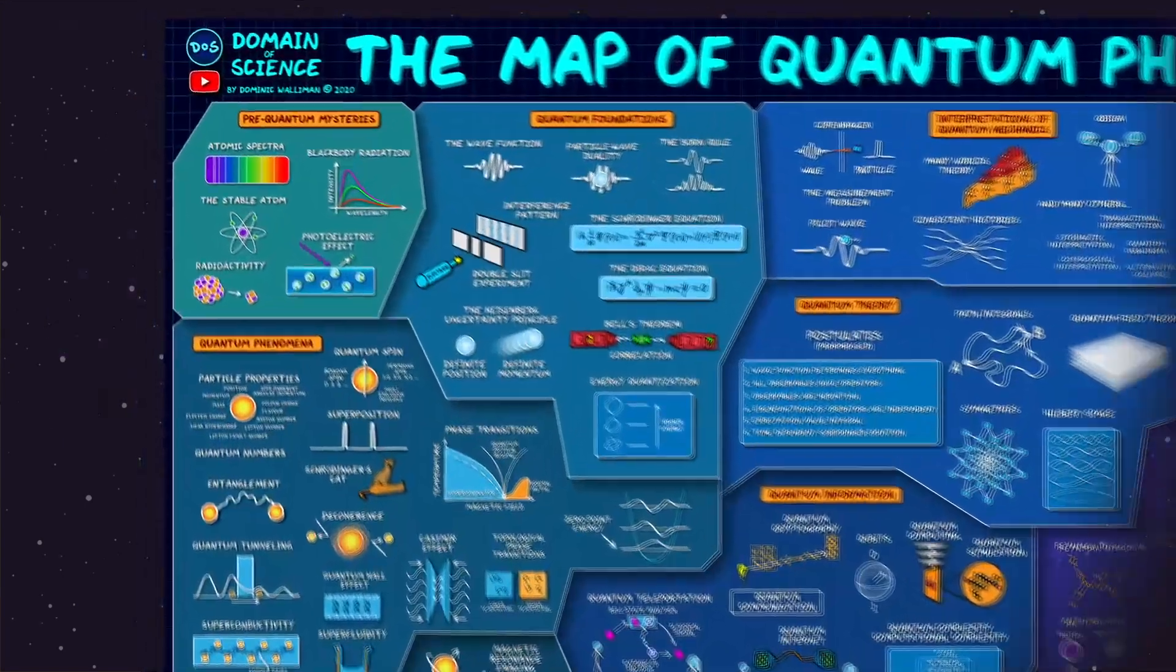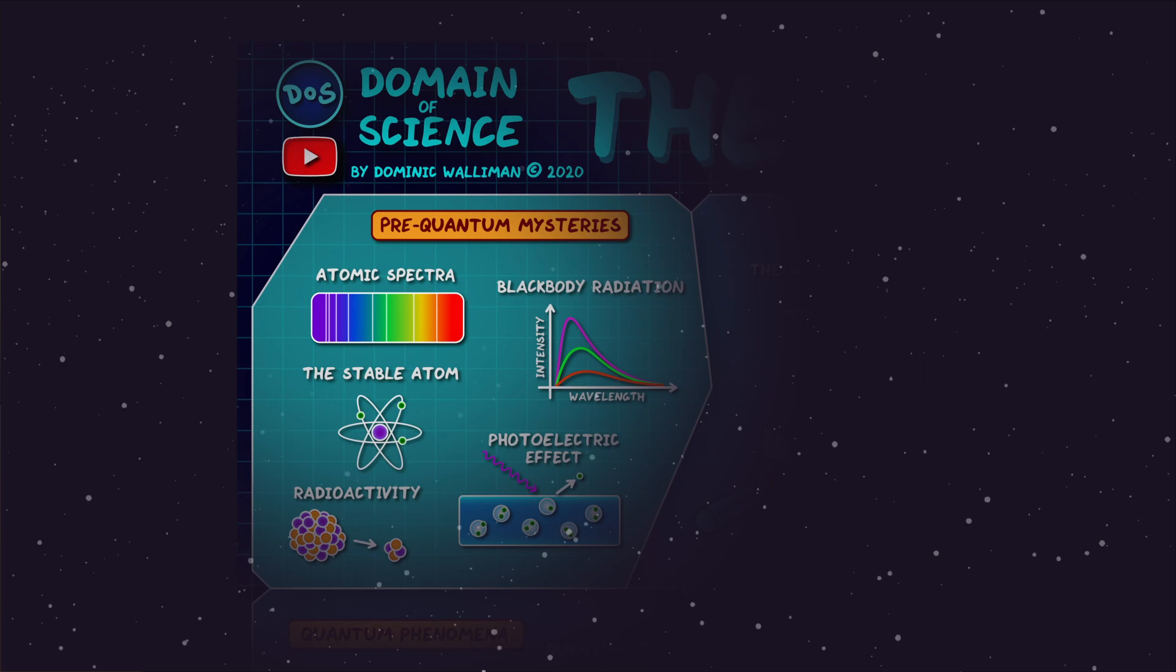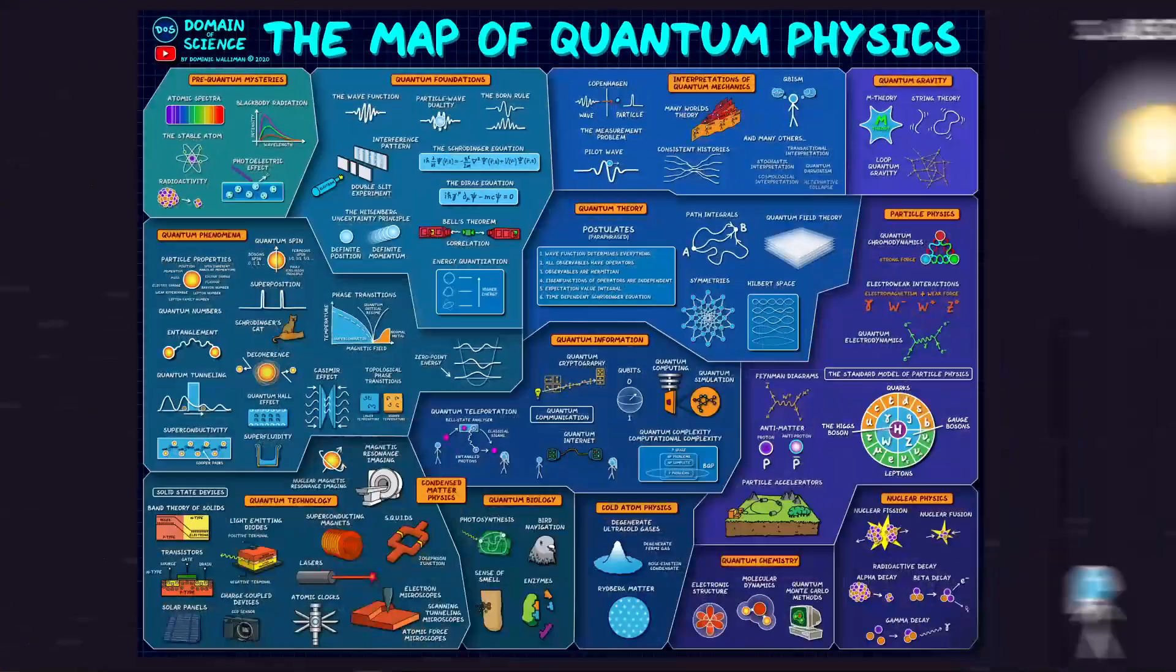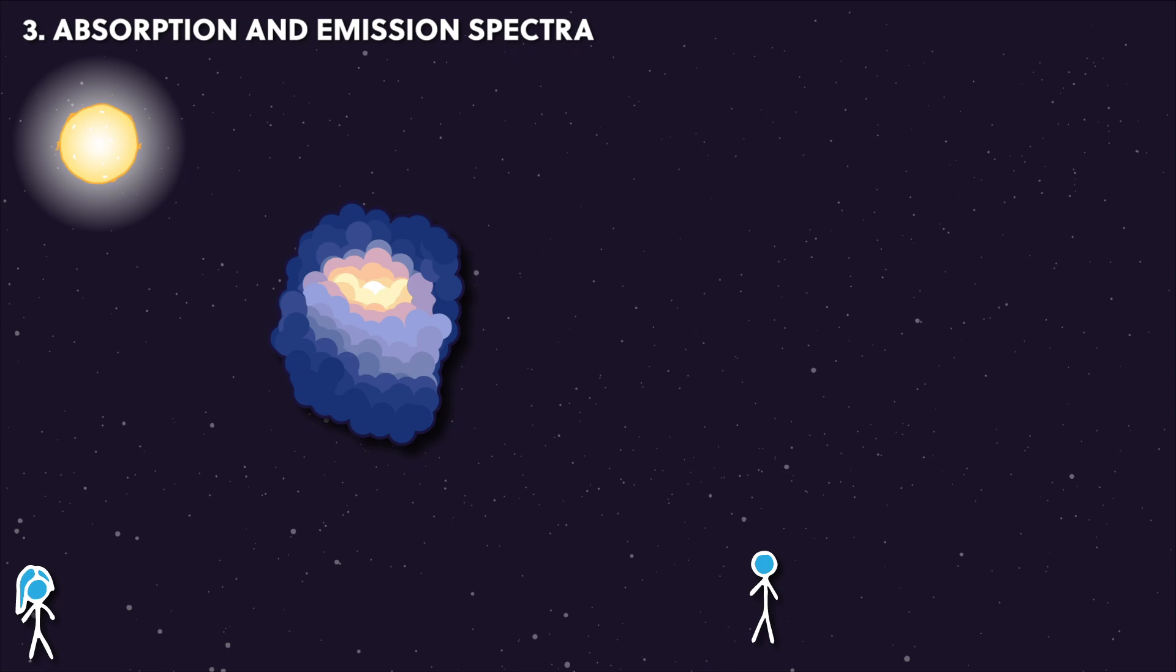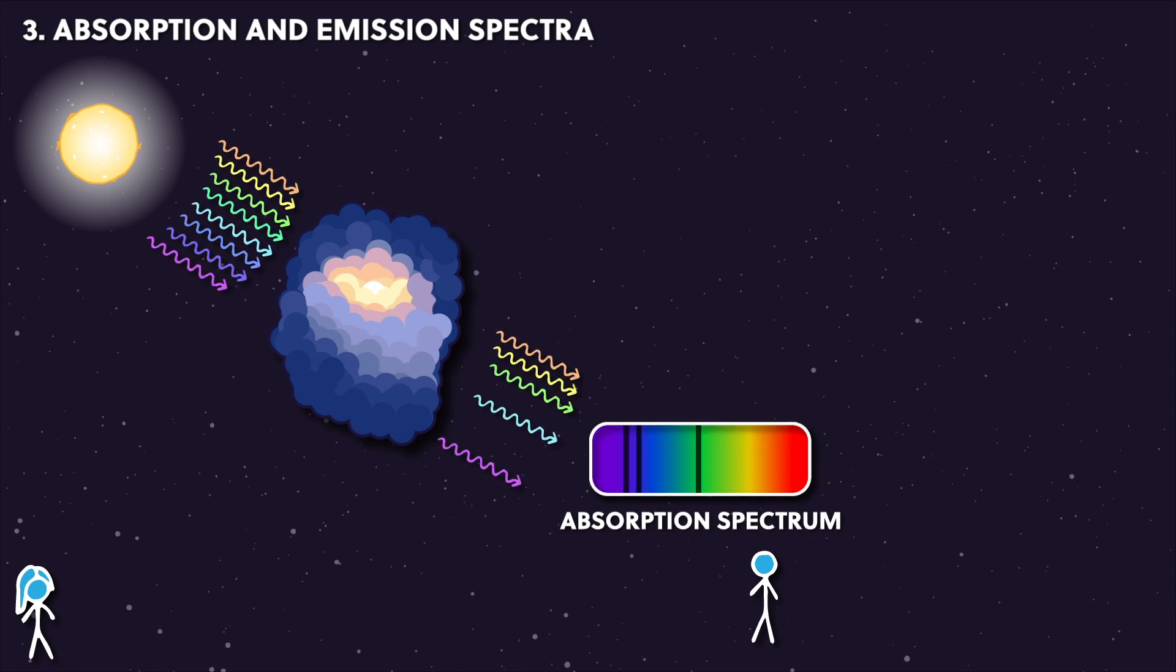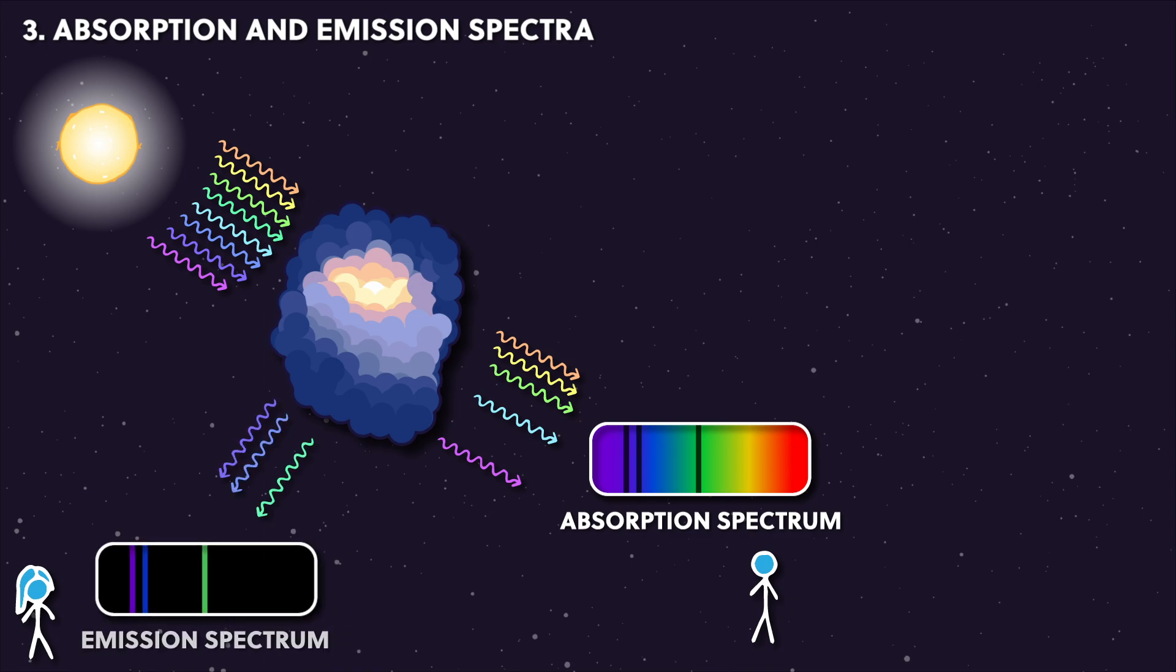I've previously mentioned atomic spectra in my map of quantum physics video. Because this subject is so cool, I made this video to dig deeper. There are two kinds of atomic spectra: absorption spectra, which is where the light source is behind a gas and the gas absorbs and scatters certain wavelengths of light, leaving dark lines in the spectrum of the star. The opposite is emission spectra, which is the same process but seen from a different angle—now you're only looking at the re-radiated light.